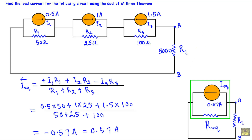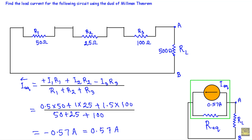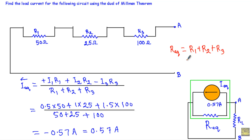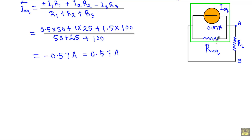For R_equivalent, I calculate the resistance with respect to terminals A and B by replacing all current sources with open circuits. Since R1, R2, and R3 are in series, R_equivalent equals R1 + R2 + R3 = 50 + 25 + 100 = 175 ohm.